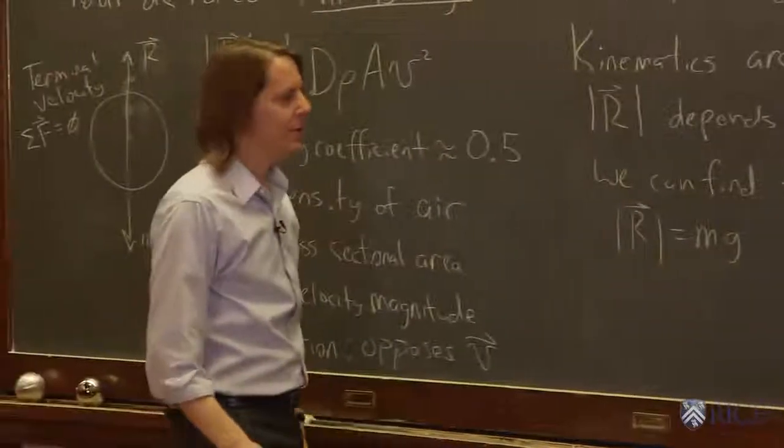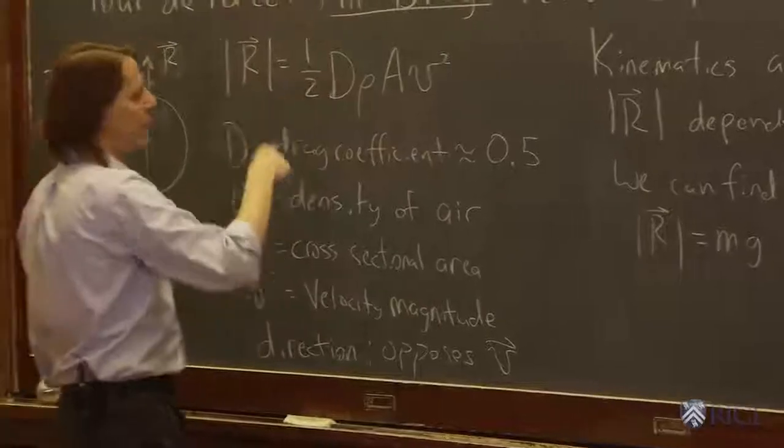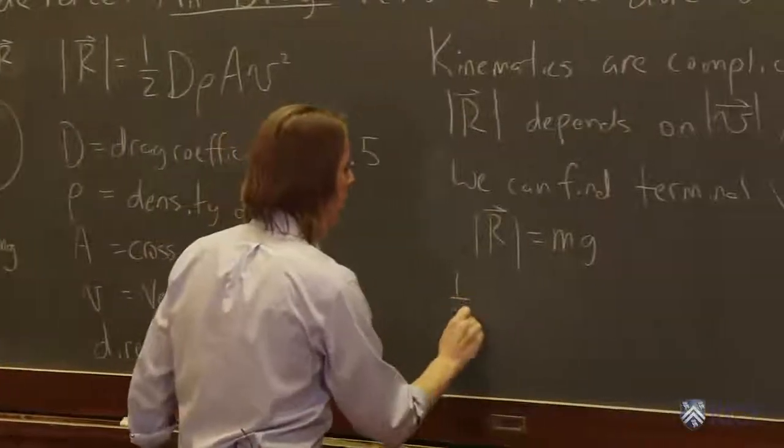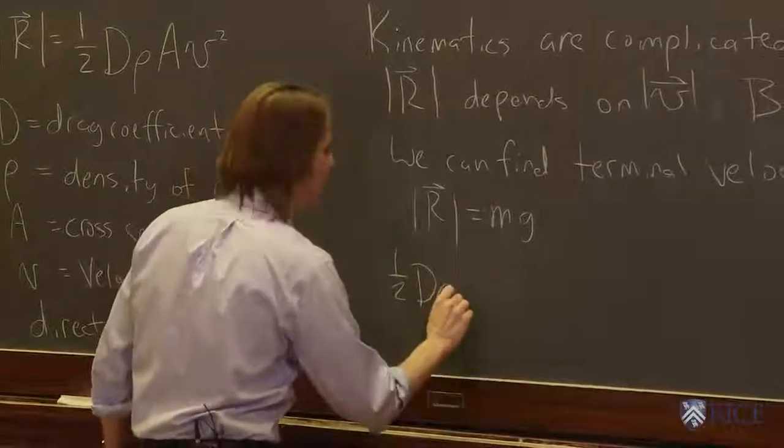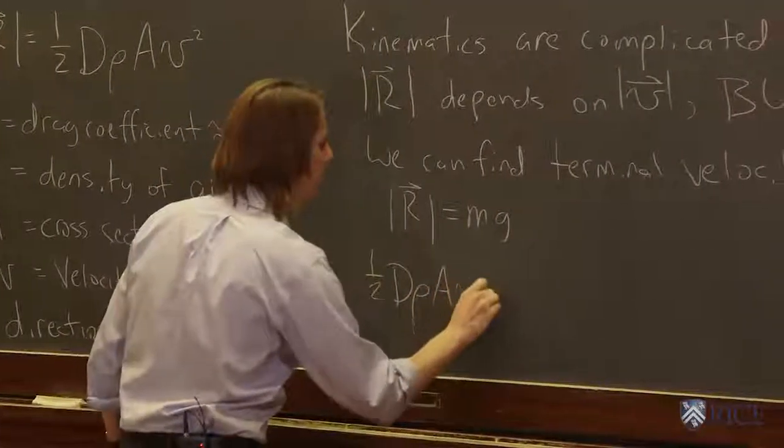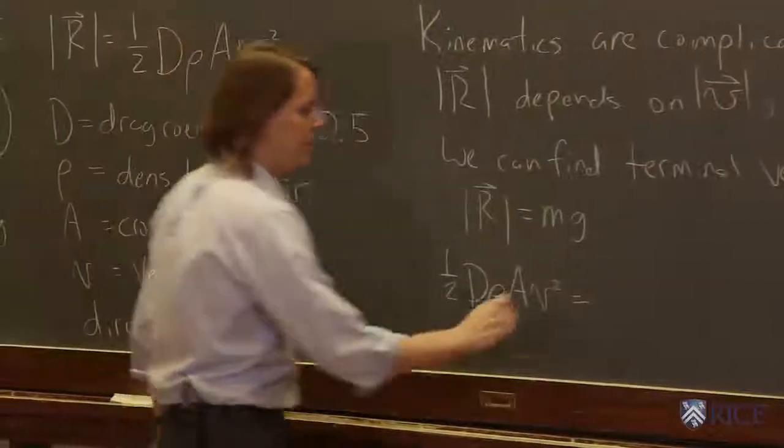So r was what? 1/2 d, drag coefficient, density of air, cross-sectional area, velocity squared, equals mg.